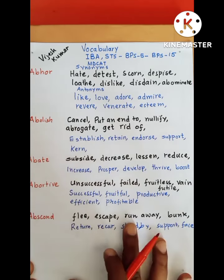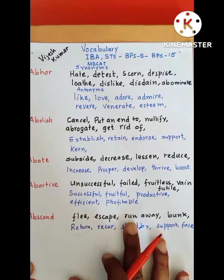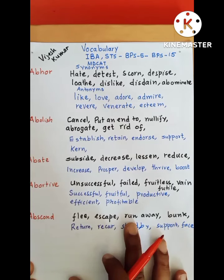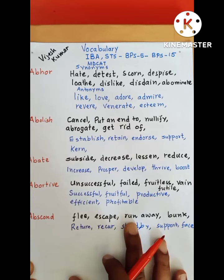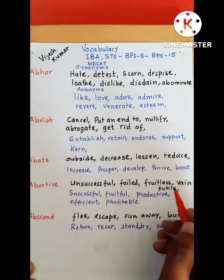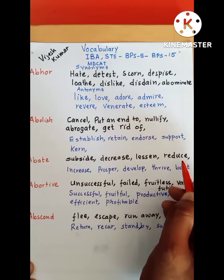Next word is abate. Abate means subside, decrease, kam hona, lessen — spelled L-E-double-S-E-N — reduce. We have made a verb of 'less' by adding E-N.